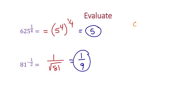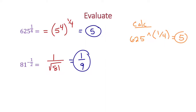On your calculator, type 625, then the caret symbol — that's the up arrow — then open parenthesis, then 1, then the division sign, then 4, then close the parenthesis and press enter. You'll get the answer of 5, confirming it works.